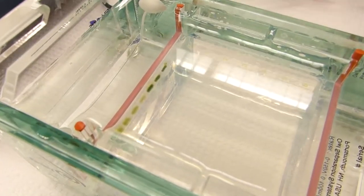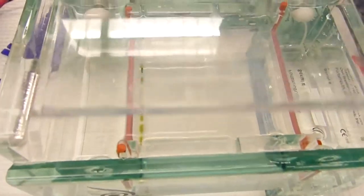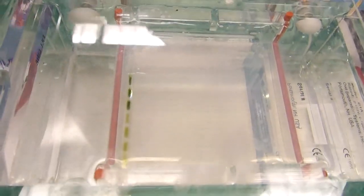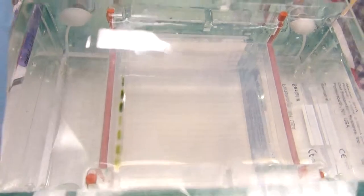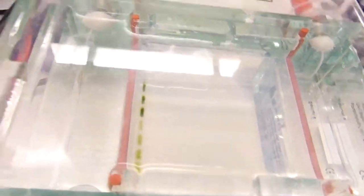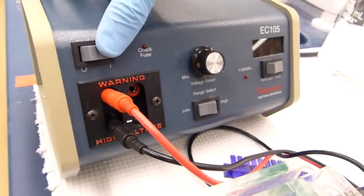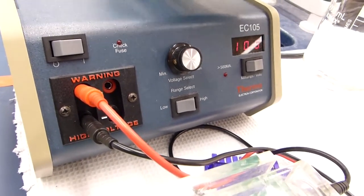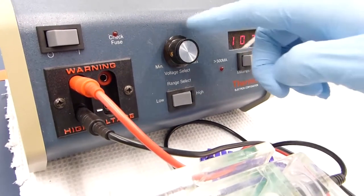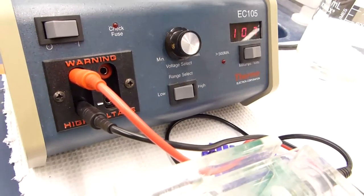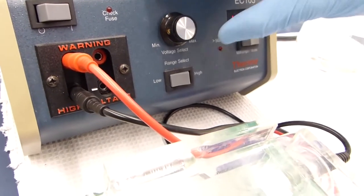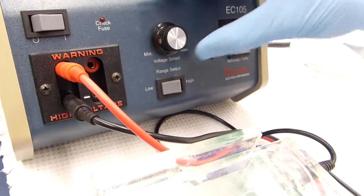Once you have placed your last sample in the gel, you want to slide the cover of the gel lid on so that the red and black nodes slide into their spots and are fully connected. From there you want to turn on the gel electrophoresis machine and set the electricity to whatever setting you need for the time that you want it to run.